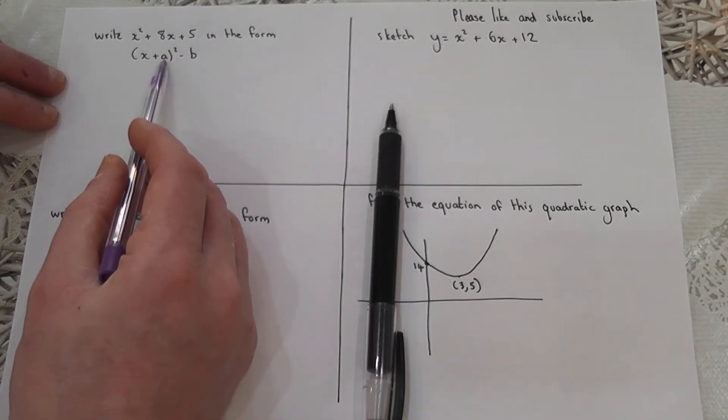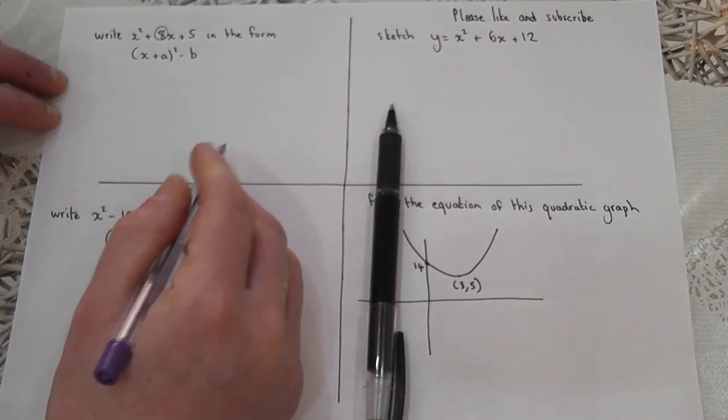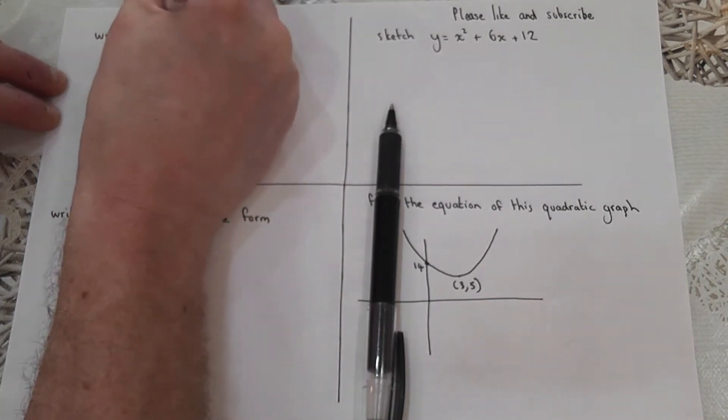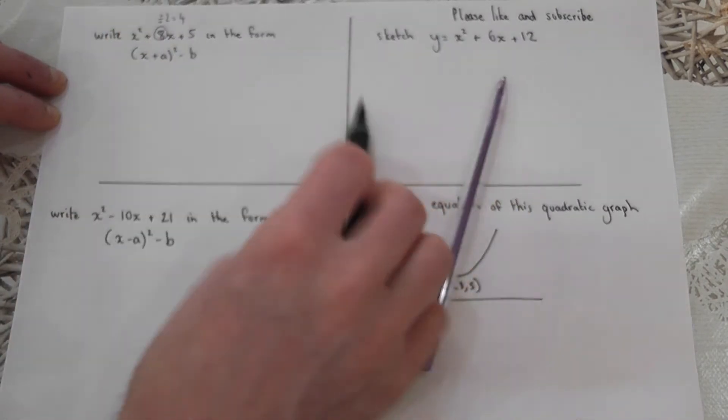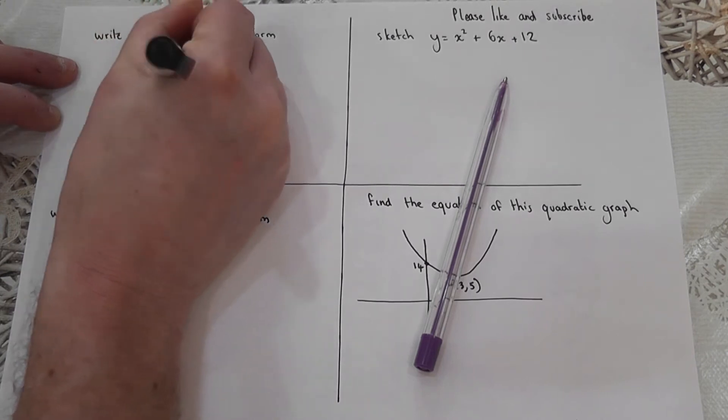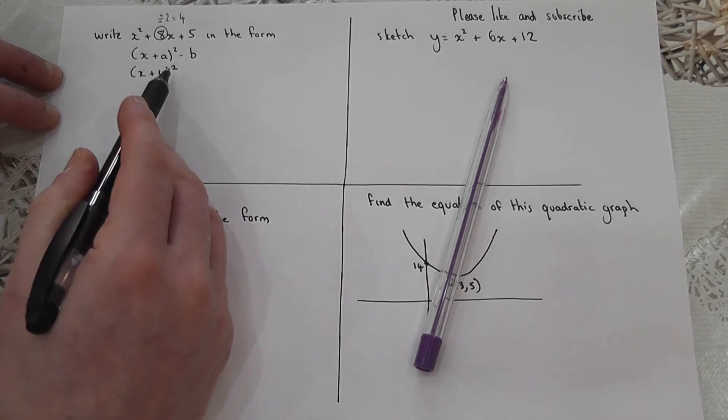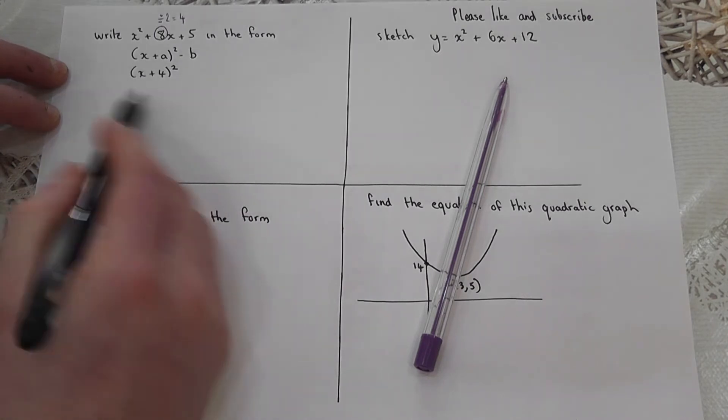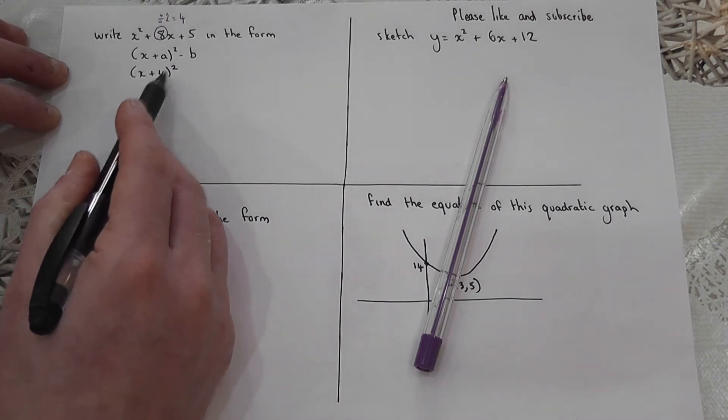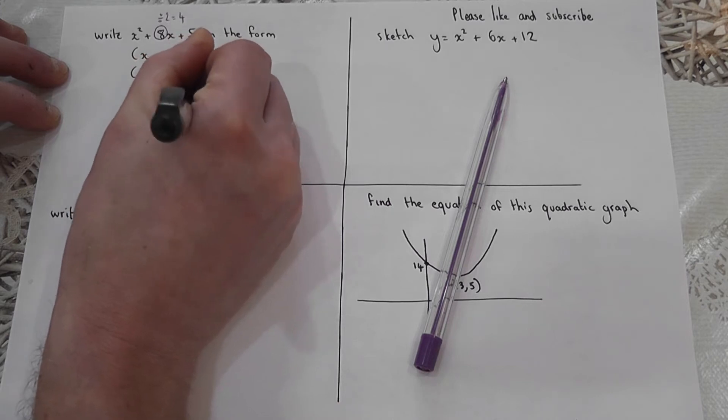To get the a in the bracket, we always halve the coefficient. Eight divided by two equals four, so this becomes x plus four squared. When you expand x plus four squared, you get x squared plus eight x, but you get a plus 16, because four squared equals 16.